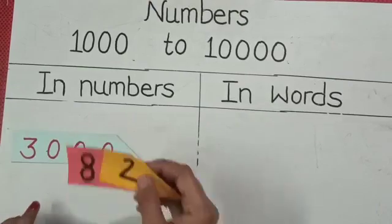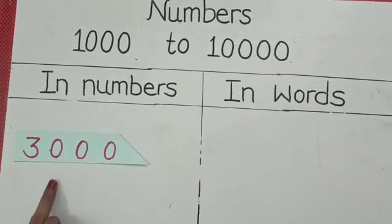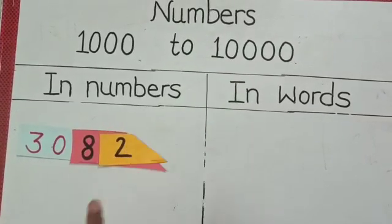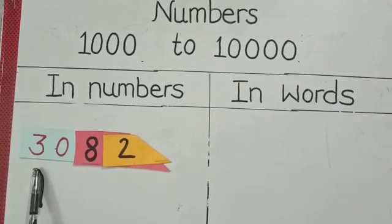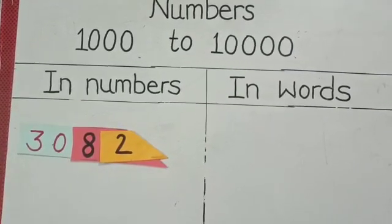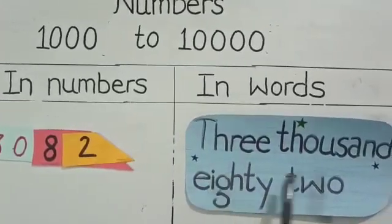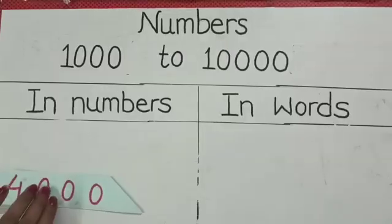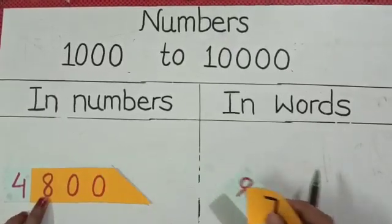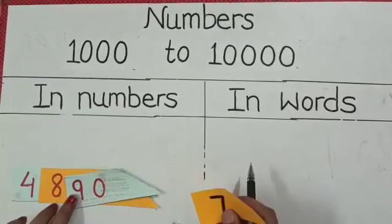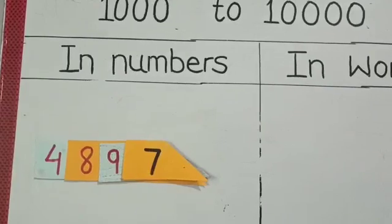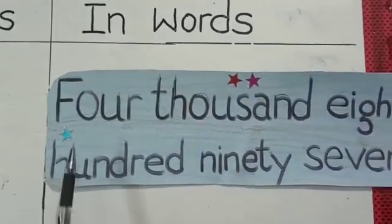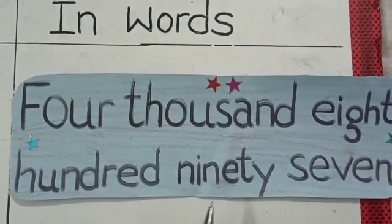3000 students, we have not any digit at the place of hundreds. 82, so this numeral will be read as 3082 and in words 3082. 4,897. 4,897 and in words 4,897.